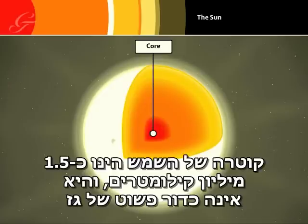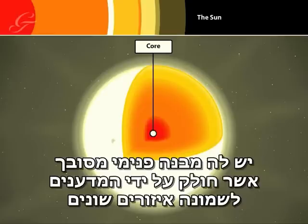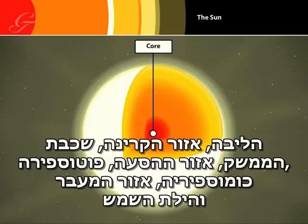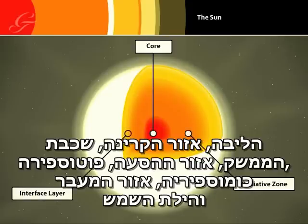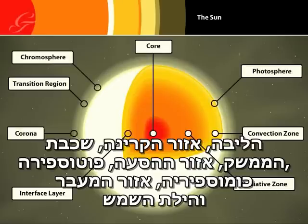At 150,000 kilometres across, the Sun is not a simple ball of hot gas but has a complex internal structure that scientists have divided into eight separate zones: the core, the radiative zone, the interface layer, the convection zone, the photosphere, the chromosphere, the transition region and the corona.